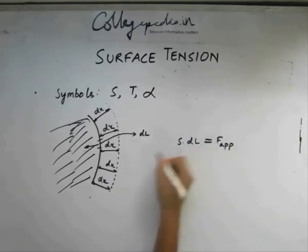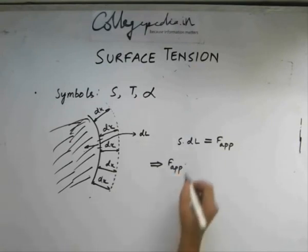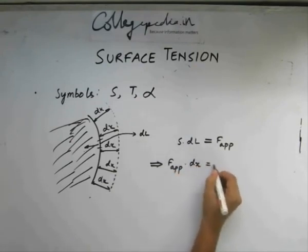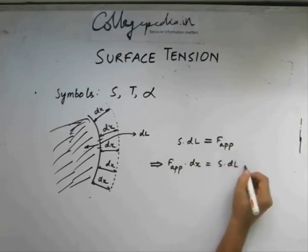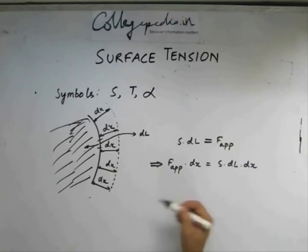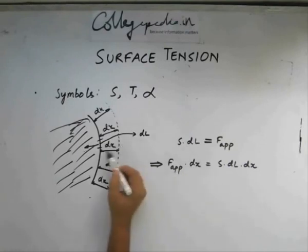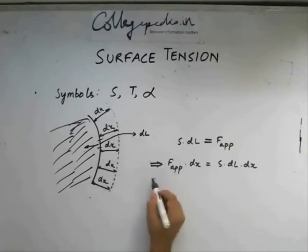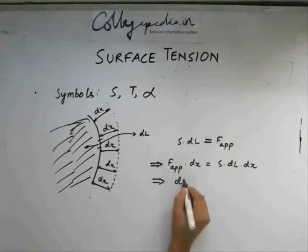If you multiply both sides, say I bring f up here, if I multiply both sides with dx, what we get is this. This is basically the work done. Force times this displacement. So this is dw.